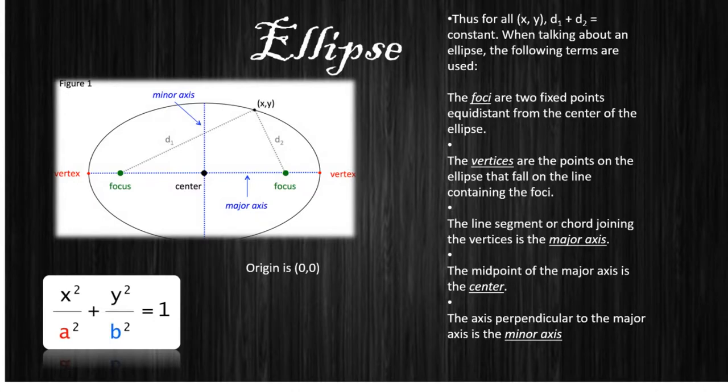This is basically what I was just saying before. When we talk about an ellipse, we do have to get some definitions down first. The foci are two fixed points equidistant from the center of the ellipse. The vertices are the points on the ellipse that fall on the line containing the foci. The line segment or cord joining the vertices is known as the major axis. The midpoint of the major axis is the center or the origin. Here it is (0,0). And the axis perpendicular to the major axis is the minor axis. Again, this equation pops up. It's x squared over a squared plus y squared over b squared equals one.